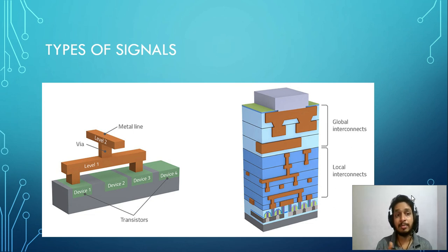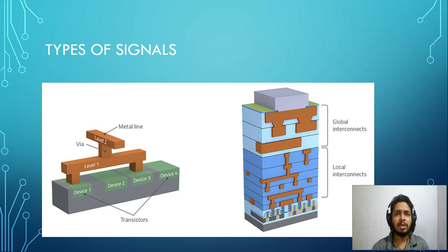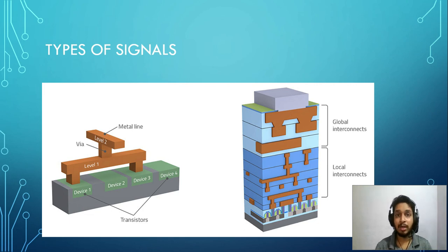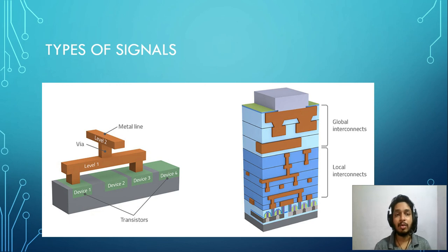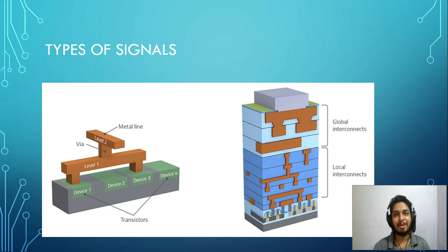These are the types of signals we have to manage. The number of metal layers varies according to the complexity of the chip and how many layers are needed. These are the basics of metal layers in VLSI. Thanks a lot for watching, and bye.